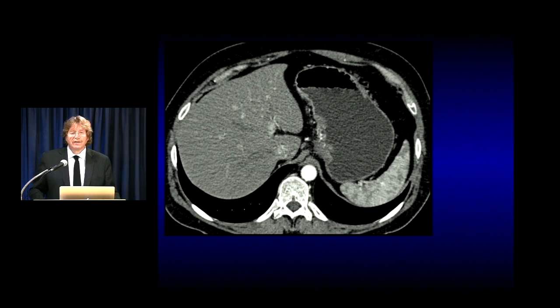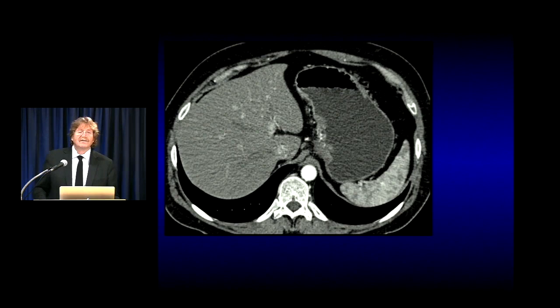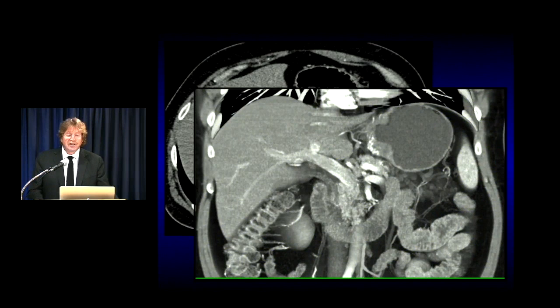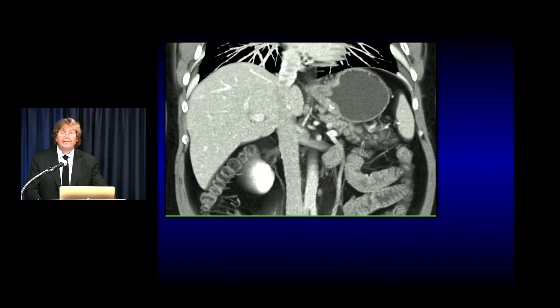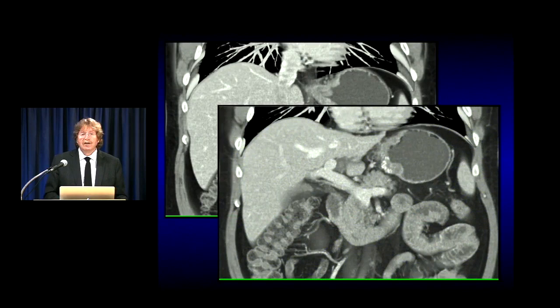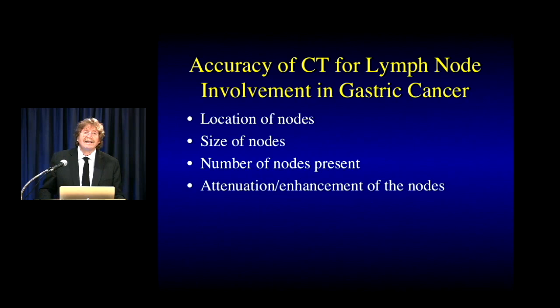Sometimes lesions are more subtle. In this case there's faint thickening at the GE junction — often a challenging area — but there's faint calcification. Faint calcification is never normal. You're uncertain on axial, but look at the coronal view: you see the thickening at the GE junction and the dystrophic calcification very obviously. Mucinous adenocarcinoma — be it colon, stomach, or ovary — often calcifies. That's exactly what this was: a beautiful example of tumor at the GE junction.